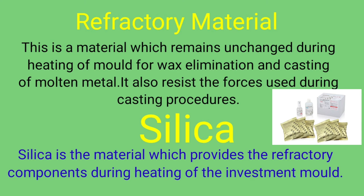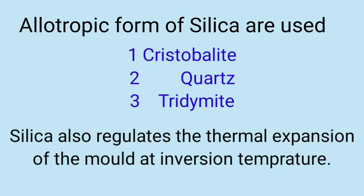Refractory material is a material which remains unchanged during heating of the mold for wax elimination and casting of molten metal. It also resists the forces used during casting procedures. Silica is the material which provides the refractory components during heating of the investment mold. Allotropic forms of silica used are: Number 1, cristobalite; Number 2, quartz; Number 3, tridimite. Silica also regulates the thermal expansion of the mold at inversion temperature.